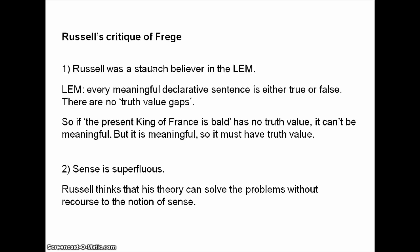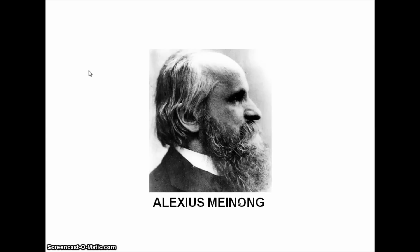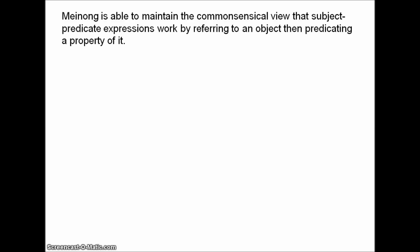We'll come to Russell's own theory in the next video. Those were his two basic criticisms of Frege. Now we turn to Meinong — Alexius Meinong. Meinong's solution applies to the final two problems we saw about empty terms. Meinong is able to maintain the commonsensical view that subject-predicate expressions work by referring to an object and then predicating a property of it. Indeed, expressions must refer in order to be meaningful, in his view. The solution, to put it briefly, is that some objects do not exist. The Doctor is an object — he is a Time Lord, he travels through time and space in a police box, his physical and psychological characteristics change radically — but he doesn't exist.